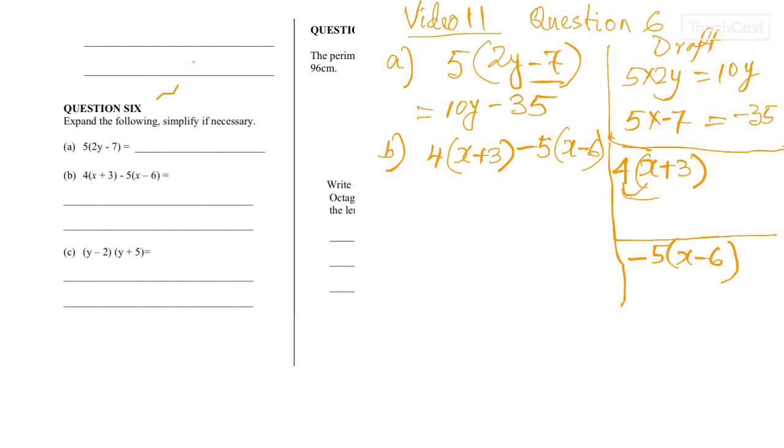And then I am going to multiply these two terms. That will give me 4x plus 12. And this will give me negative 5x plus 30. So, that negative 5 and negative 6, if we multiply them together, that will give you positive 30.